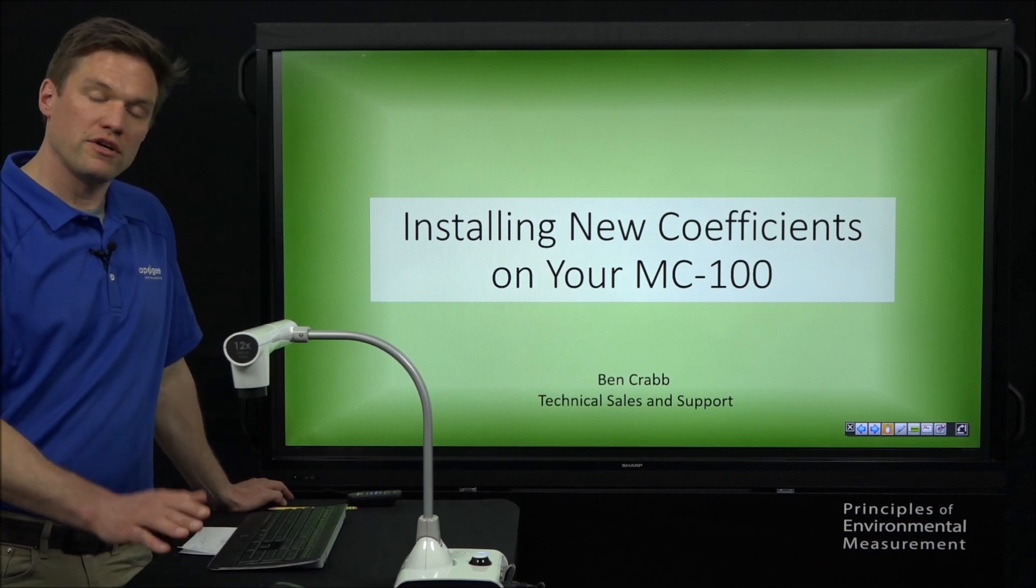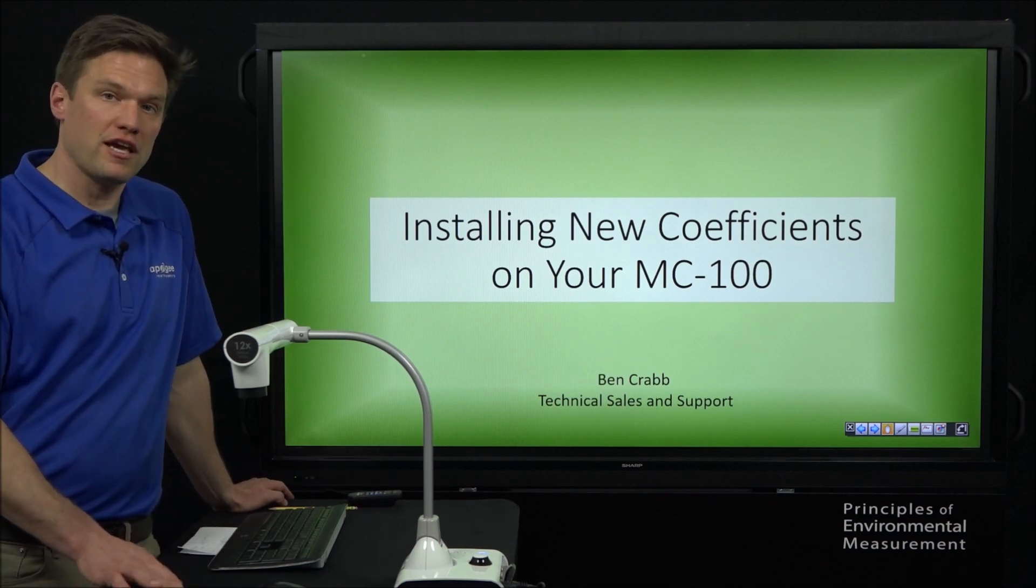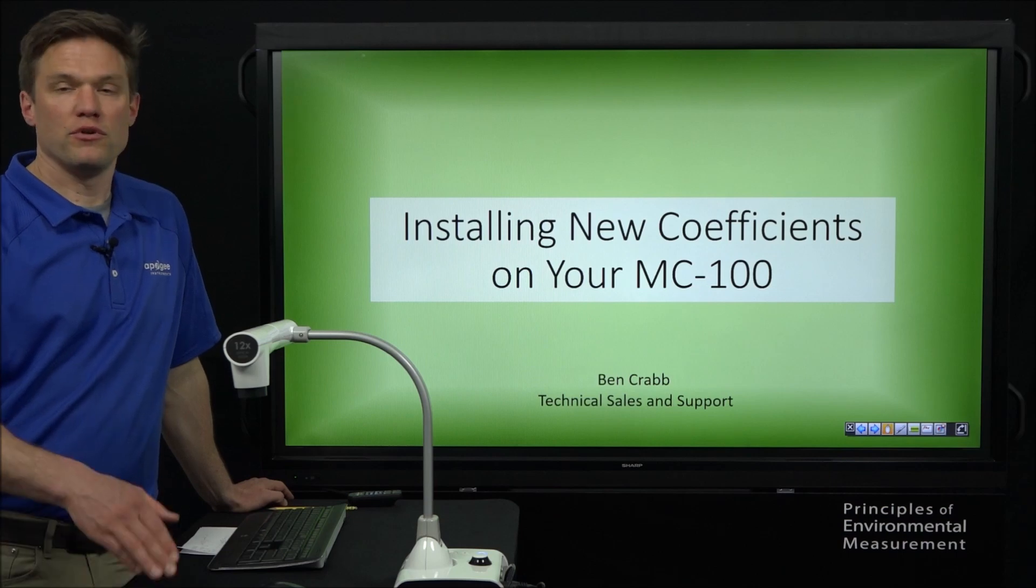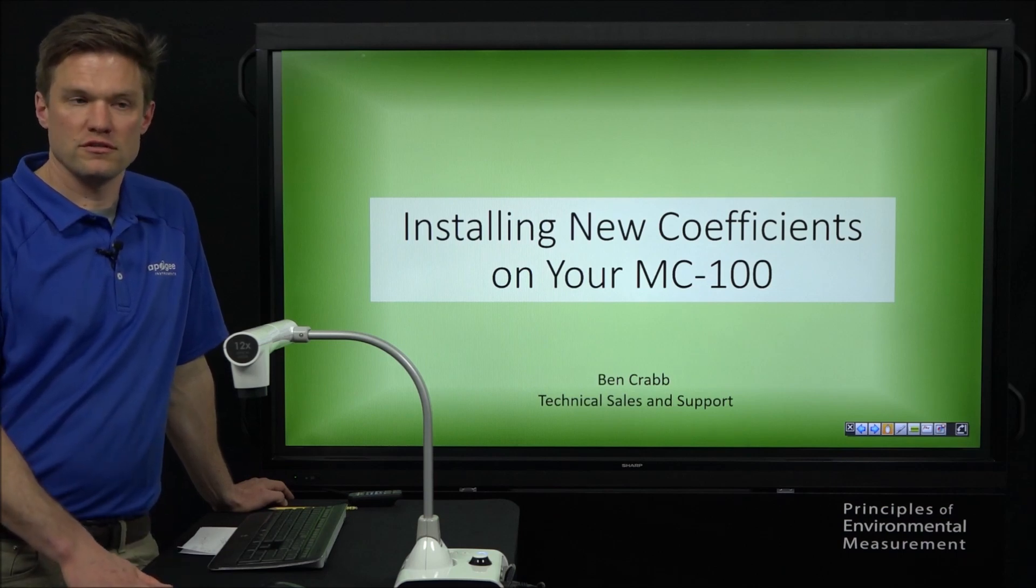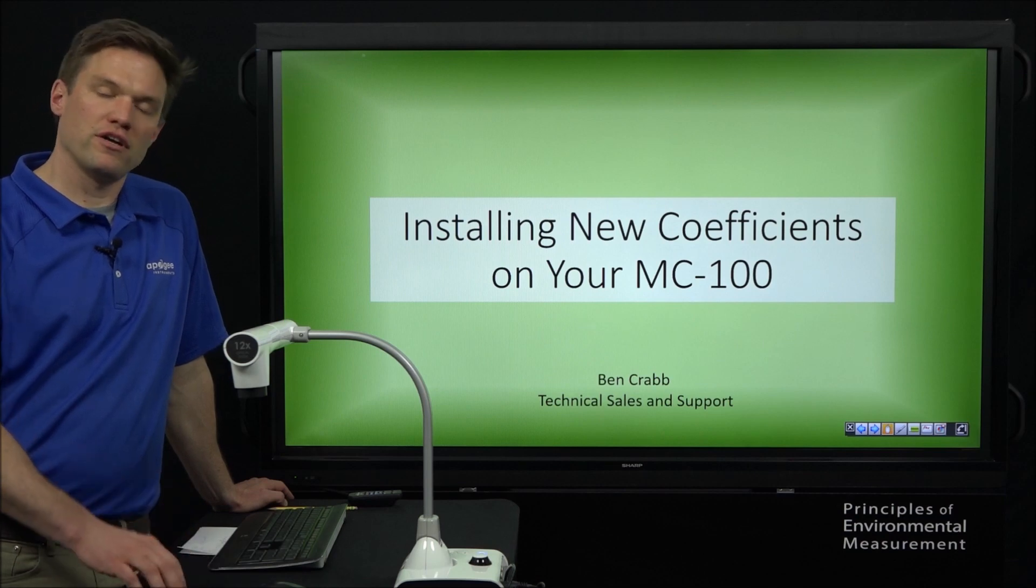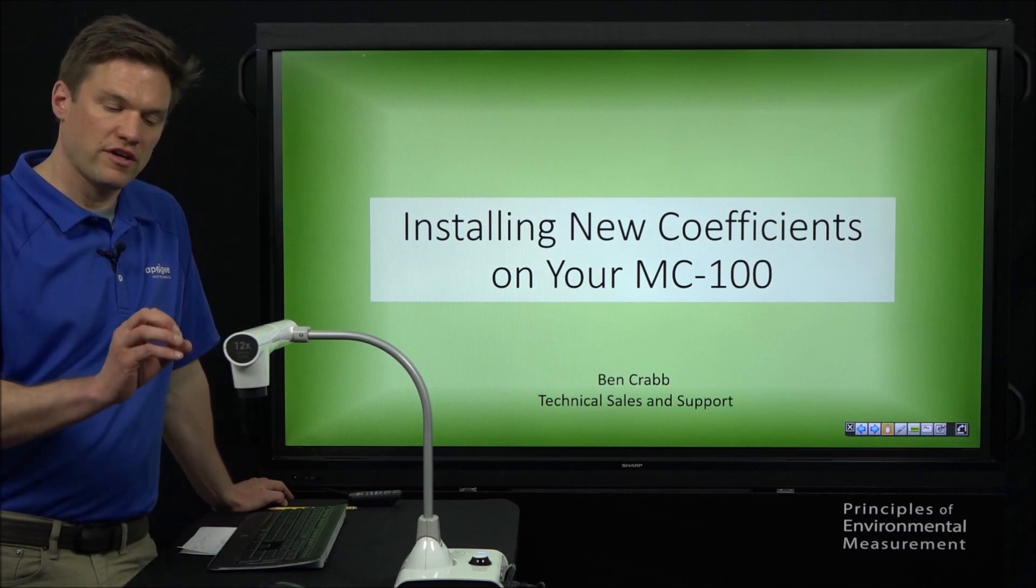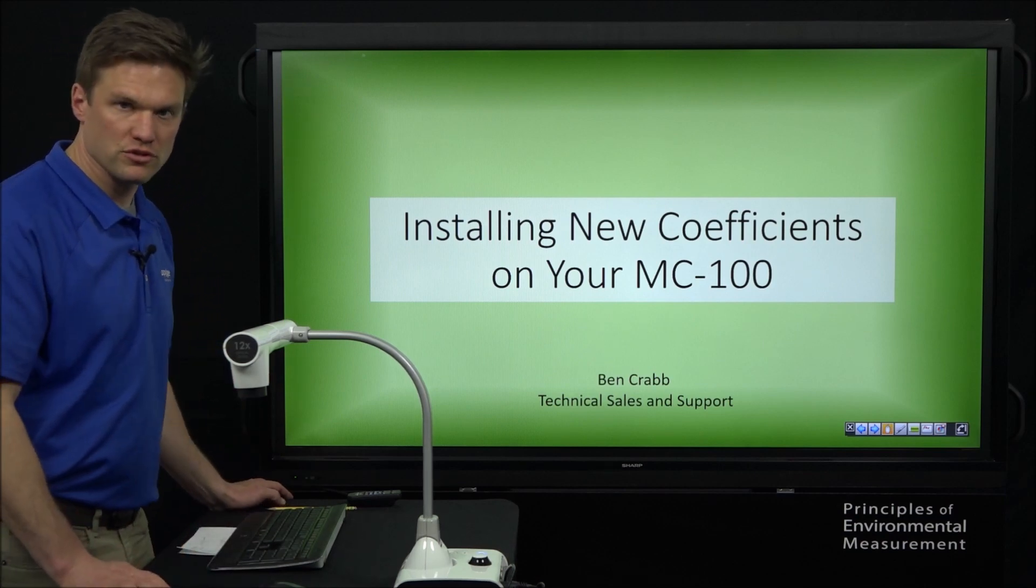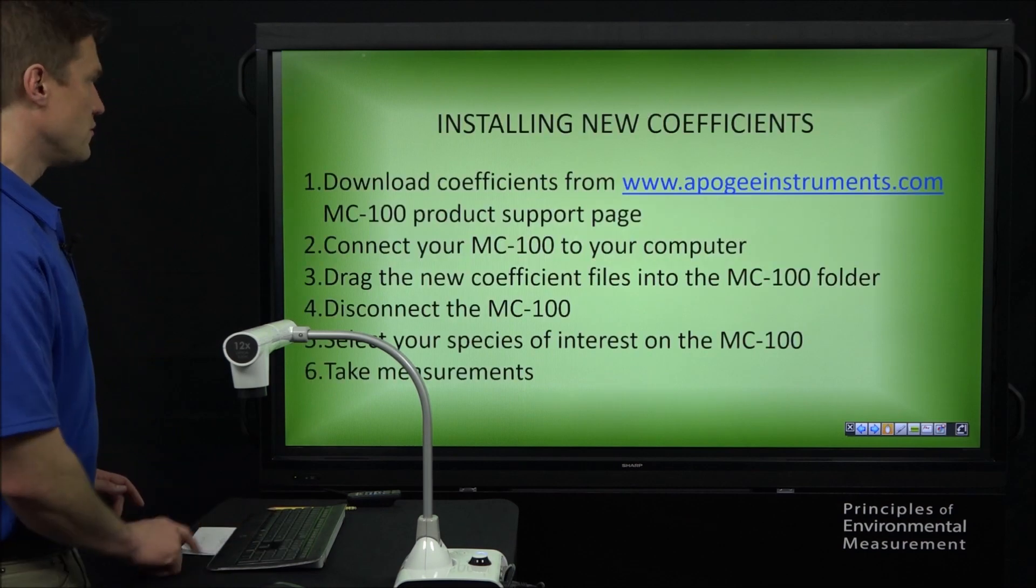What inspired this process is that we have some new coefficients for cannabis and for grapes. But in the future, as we have new species with new coefficients, you can use the same process to access those new files, add them onto your meter and get the most accurate measurements you can.